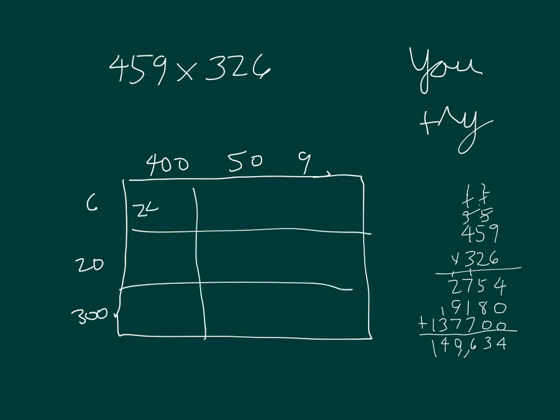2400, 6 times 50 which is 300, and then 9 times 6 which was 54. Adding those together you get 2,754. See how it matches?